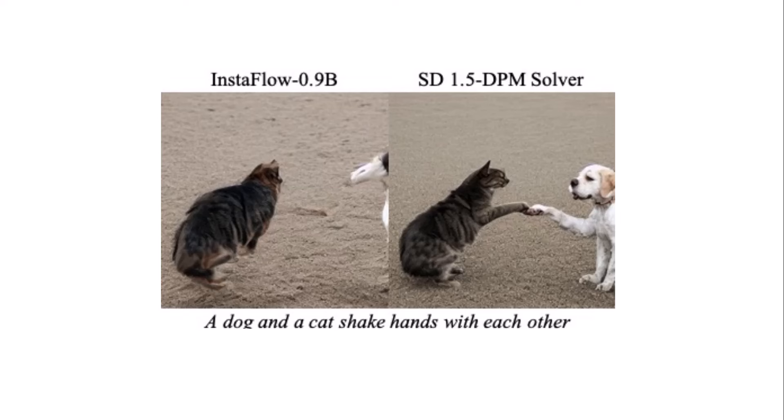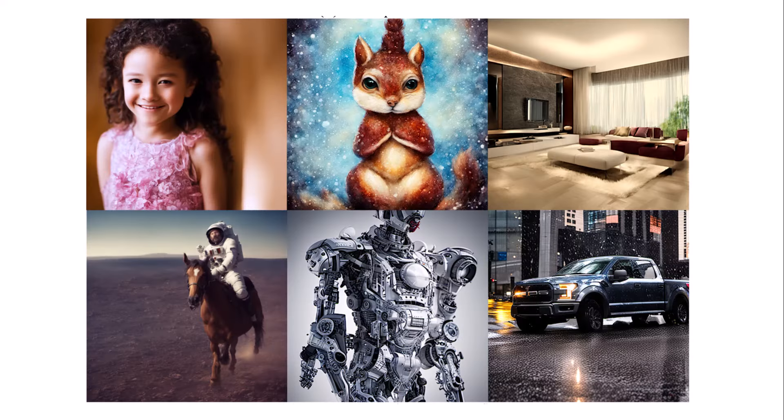InstaFlow is not perfect — for complicated text prompts like 'a dog and a cat shaking hands with each other', Stable Diffusion 1.5 can generate this but after single-step distillation it generates something that doesn't really make sense. The authors suggest that adding more training data and training longer could mitigate this issue. That was everything I wanted you to know about InstaFlow — if you enjoyed this video, don't forget to like and subscribe.